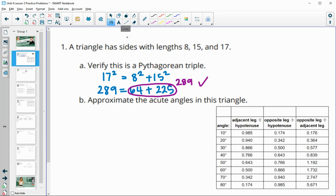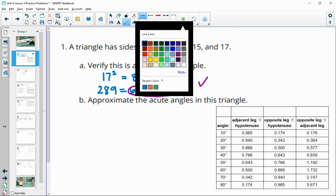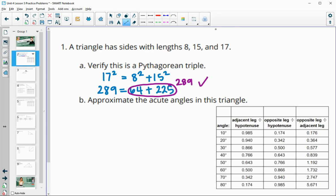Next, now that we know it's a right triangle, we want to estimate the acute angles in this triangle. First thing I'm going to do is just draw a little picture of a right triangle here and label the sides. The hypotenuse is 17, the shorter leg is 8, and then the longer leg is 15.